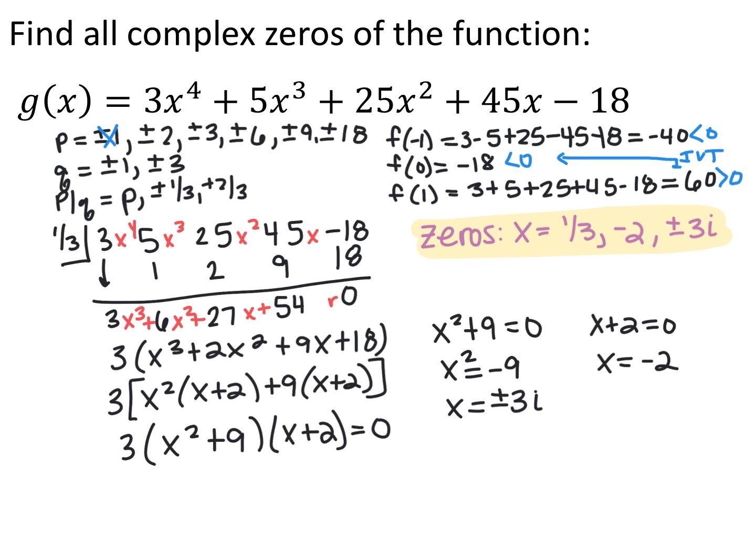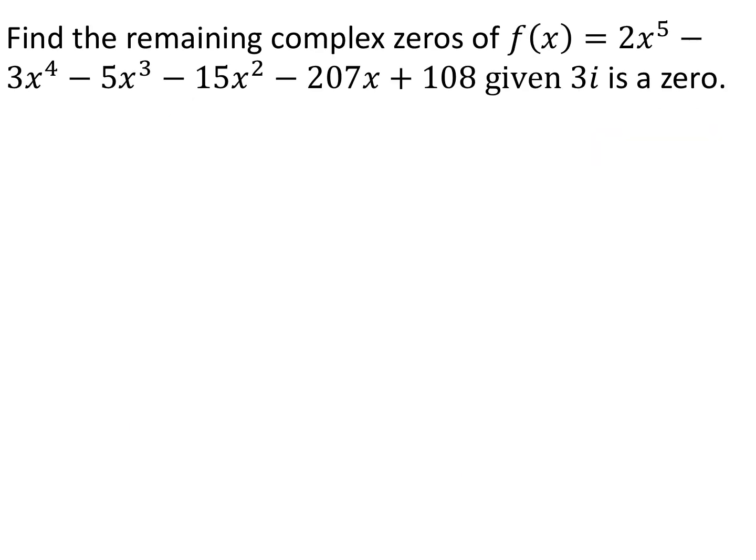When you have a polynomial like this, we start with p's and q's assuming we have at least some rational zeros, and then once we get down to a polynomial we know how to deal with, we solve it normally and our imaginary zeros come out through factoring or the quadratic formula. For this next polynomial, f of x equals 2x to the 5th minus 3x to the 4th minus 5x cubed minus 15x squared minus 207x plus 108, and we're given that one of the zeros is 3i. Because they gave us an imaginary number, they actually gave us two zeros — imaginary numbers always come with their complex conjugate pair, so we also have negative 3i.